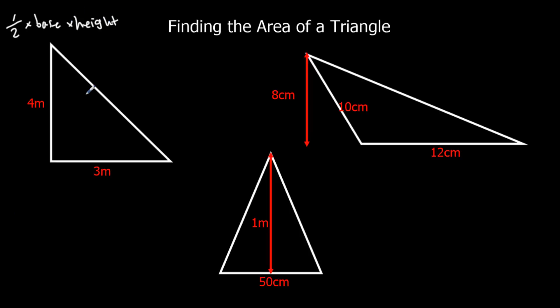So we've got half times 3 times 4. It doesn't matter what order you do multiplication in, but I'm just going to do it in the order that's there. It might not be the easiest way, but we'll just do it that way. So half of 3, that's 1.5. And 1.5 times 4, one and a half fours, that's 6. So this is 6 m squared.